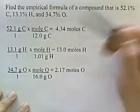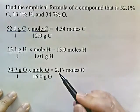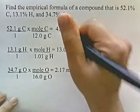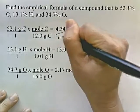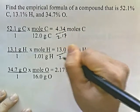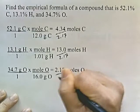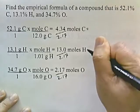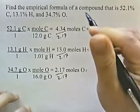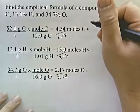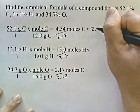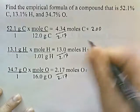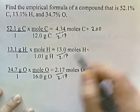And then of these three, what's the smallest number? Well, the smallest number is 2.17. So if we divide each of these by 2.17, we'll get the ratio of moles. So 4.34 divided by 2.17, that's pretty much 2.00. And then 13 divided by 2.17, that's going to give us 5.99.